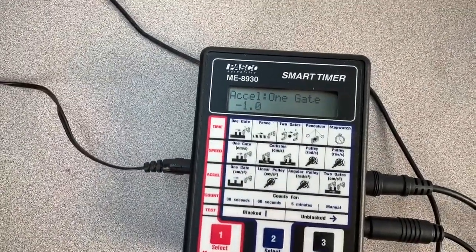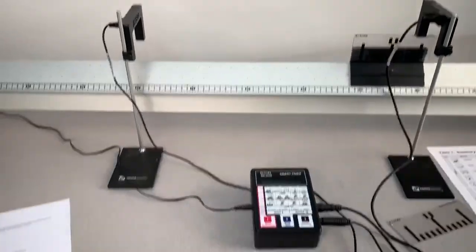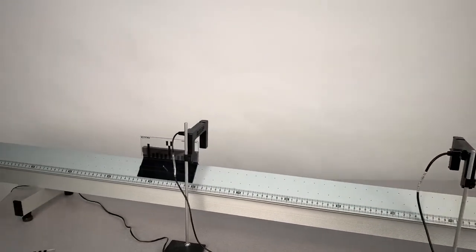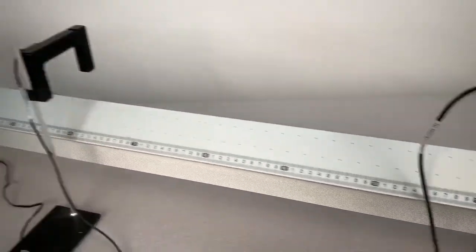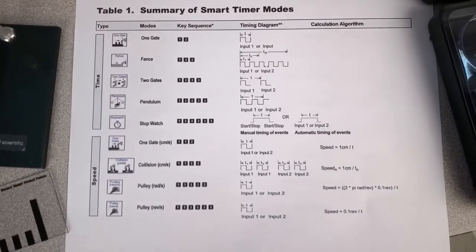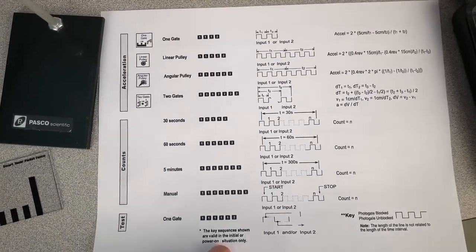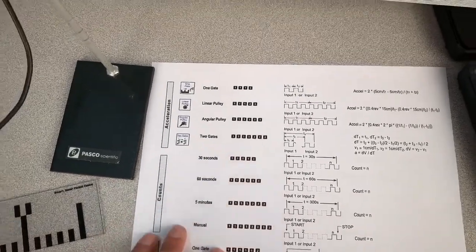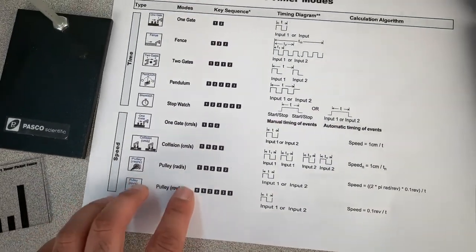Yeah, so that was just a quick way to show how the different modes work on the smart timer. Now you can use this to do collisions, you can get the different speeds so you can use that to calculate with different equations. And again this is just a summary, it's with the instruction guide for the smart timer so you can print just these two pages out from our PDF that's on Pasco's website to assist you with the different modes. Now one thing I didn't mention is you can also do linear pulley, angular pulley, and you can get the radians per second measurement as well. In order to do that you have to take one of these photogates and align it.